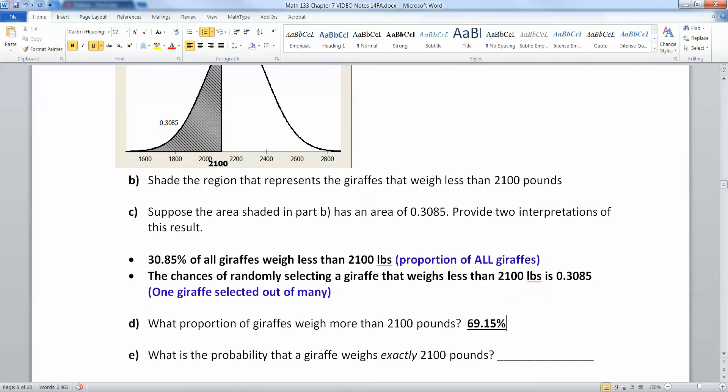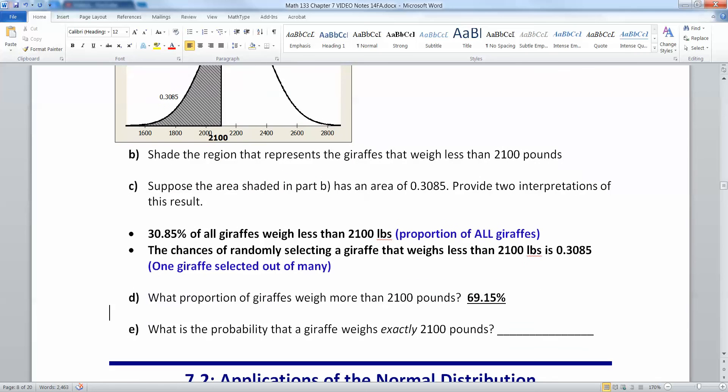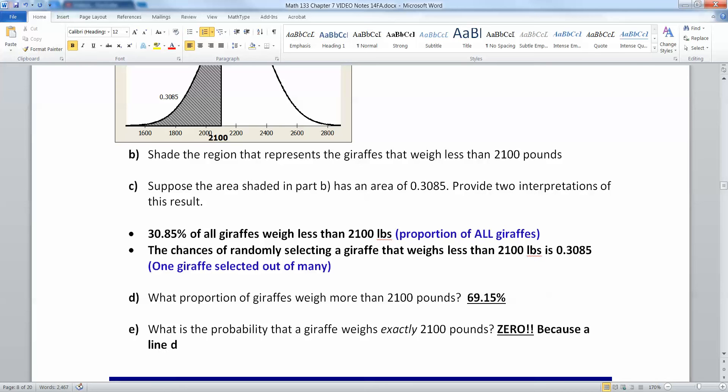Now what about the probability of weighing exactly 2100 pounds, that black line, that vertical line right there? The answer is it's a trick question: zero. Because a line does not have an area.